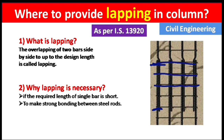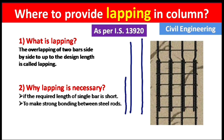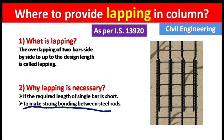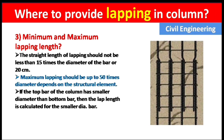Why is lapping necessary? If the required length of a single bar is short — for example, we are constructing a column and the steel goes up to a certain point but becomes short — we have to add another rod and bind them together. Lapping is necessary at this region to make a strong bonding between the steel rods.